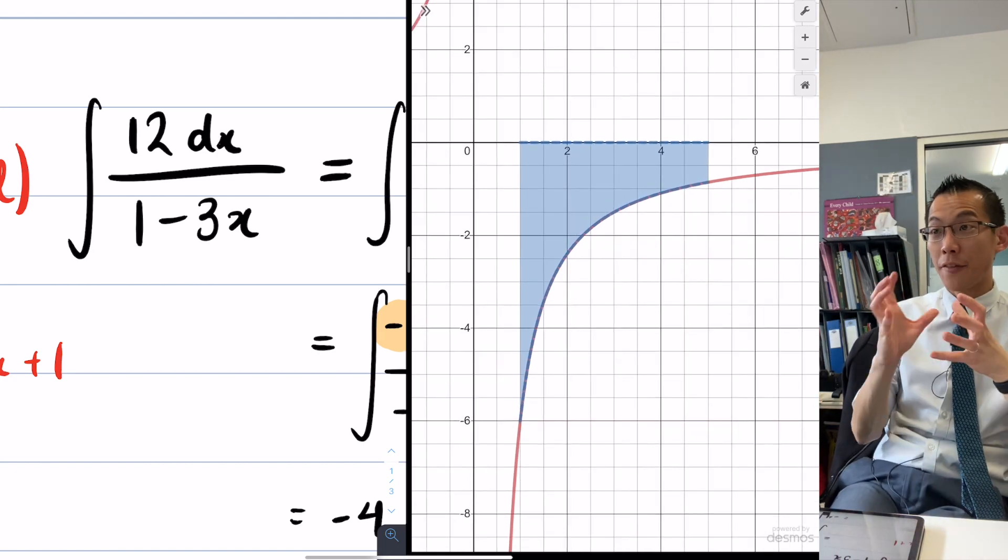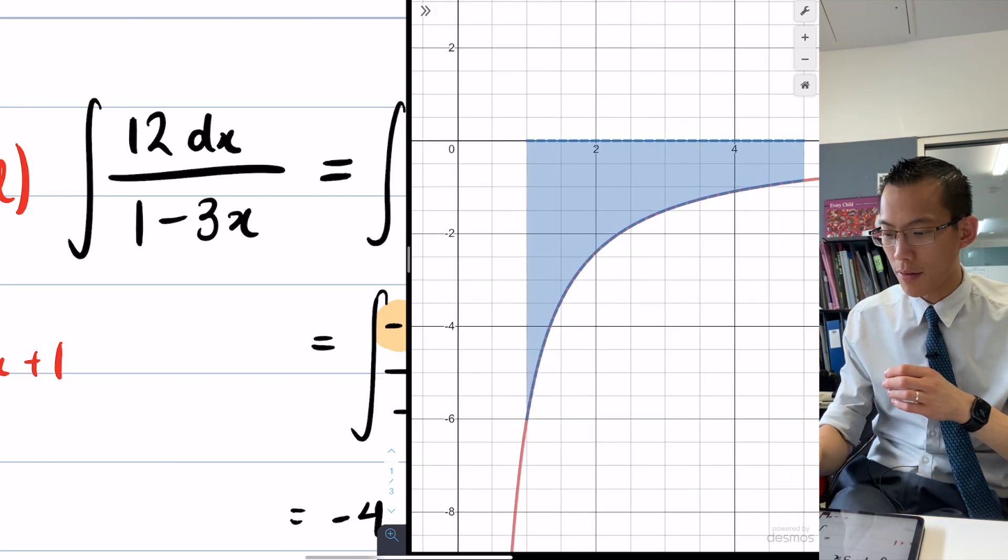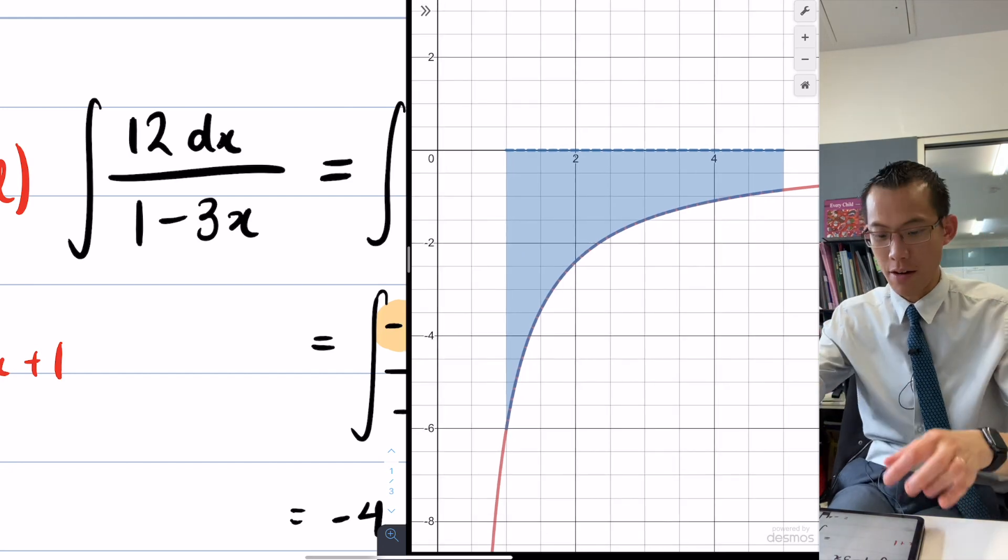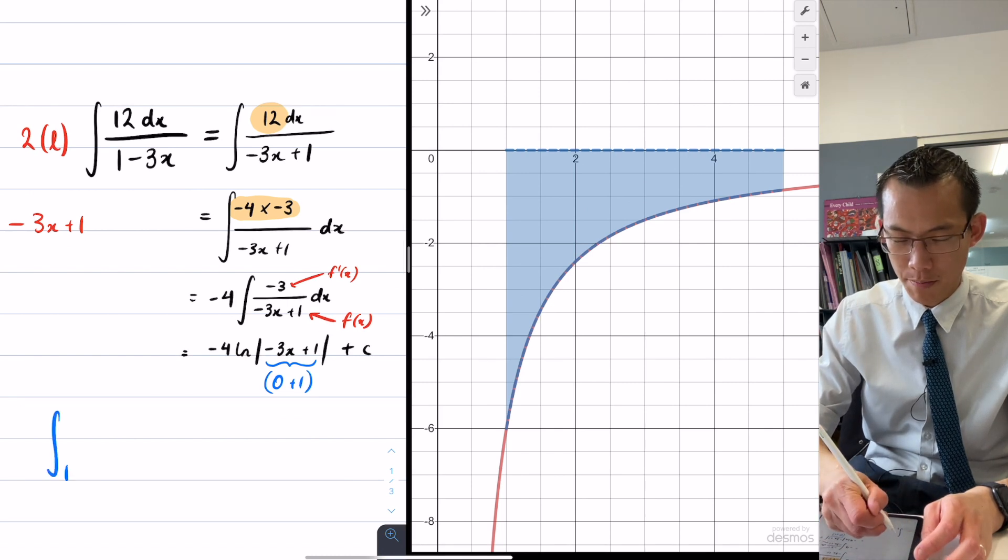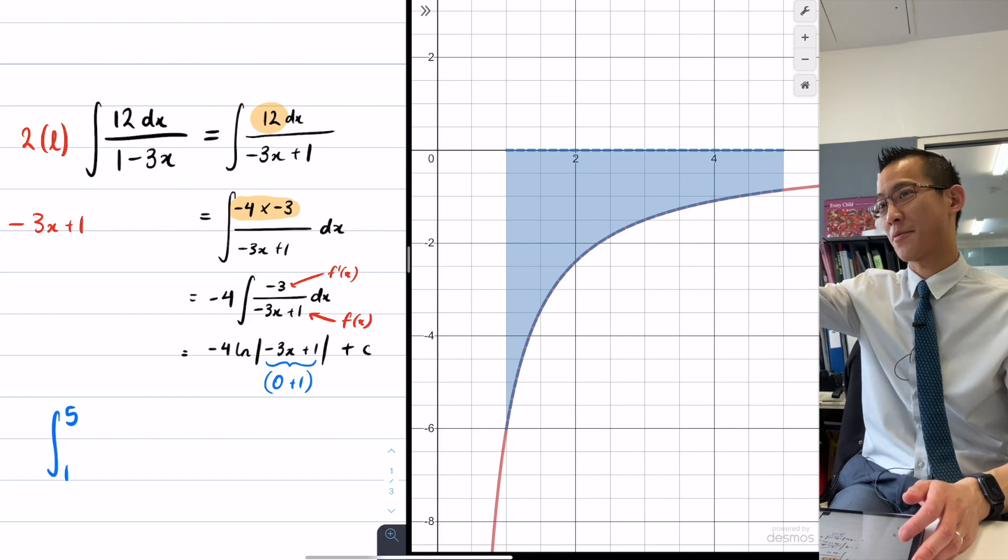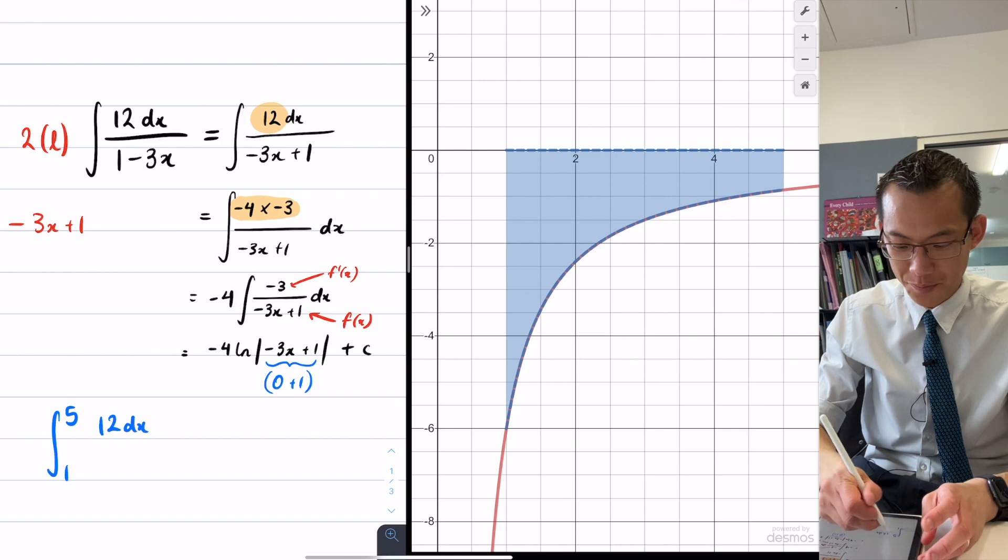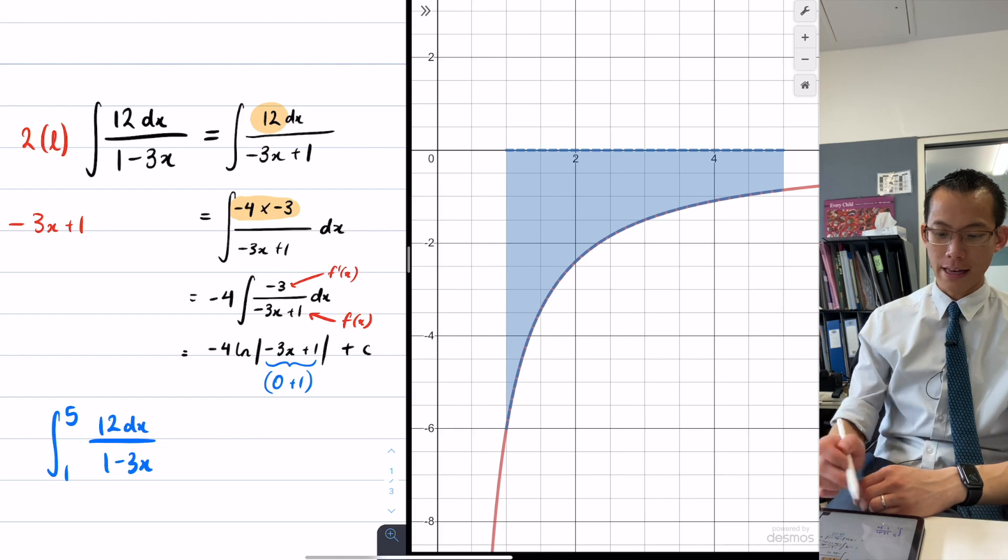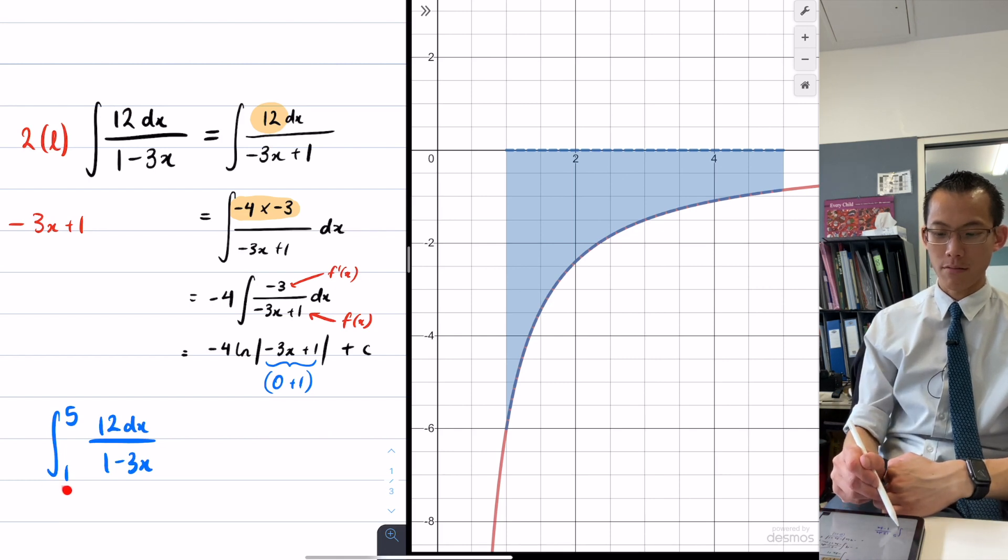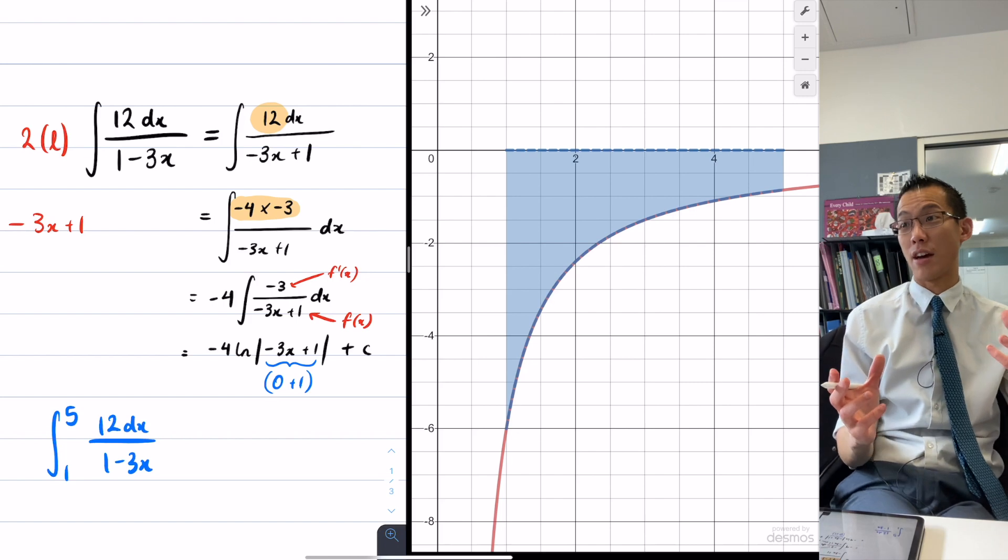If I wanted to evaluate this area, what would the definite integral look like? You'd have 1 at the top, 5 at the bottom. From 1 to 5, so you would form a definite integral from 1 at the bottom, 5 at the top, and then I would integrate this thing. If you put in values, like x equals 1 into the answer, you get negative 3 plus 1, which is negative 2. You've got a negative in there.